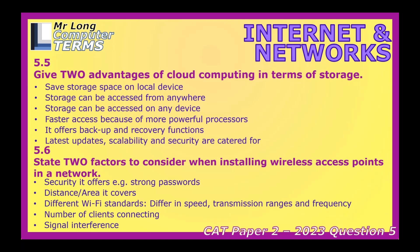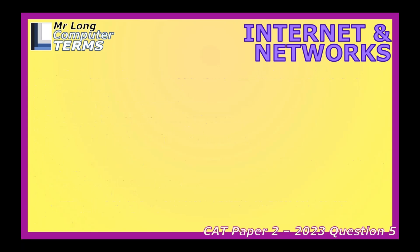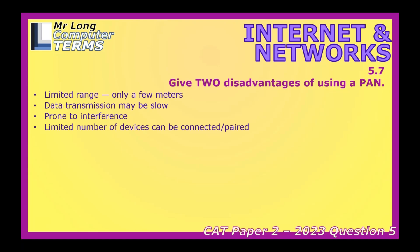Beyond Wi-Fi, there are also PANs — Personal Area Networks — like Bluetooth. Think about your Bluetooth headphones or connecting to a wireless printer. PANs are great for short-range communication, but their limited range is the main drawback — you're typically restricted to just a few meters. They can also be susceptible to interference when there are many devices nearby, and they offer slower speeds compared to Wi-Fi.